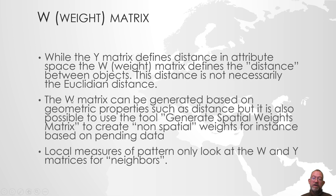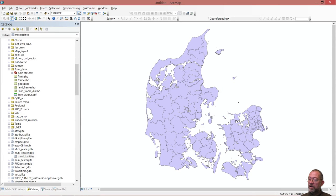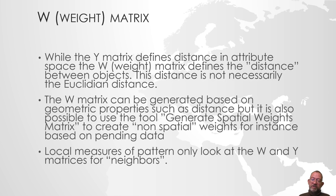There are different ways of generating the W matrix. Standard tools can generate it based on geometry, such as inverse distance or squared inverse distance. But if you need something more advanced than just distances, such as travel time — in Denmark, some municipalities are close together in Euclidean distance but have a large travel time distance, especially where we cross water. So it might be interesting to use a different tool than just the Euclidean distance, and there is a special tool for generating that type of matrix.